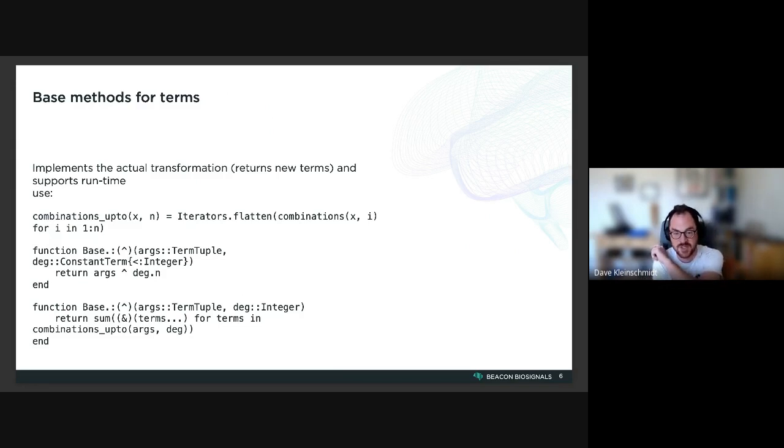So this returns a sum of a bunch of these interaction terms that are defined individually using this combinations_up_to helper function. This is taken from the Combinatorics package.